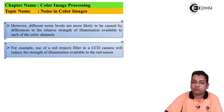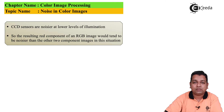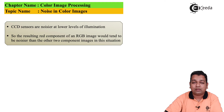For example, the use of a red-rejecting filter in a CCD camera will reduce the strength of illumination available to the red sensor. CCD sensors are noisier at low levels of illumination. CCD stands for charge coupled device. So the resulting red component of the RGB image would tend to be noisier than the other two components in this situation.